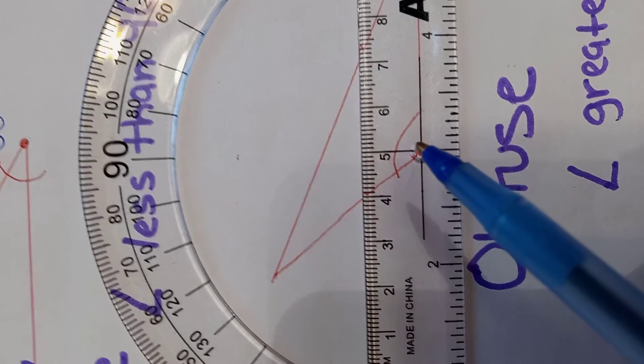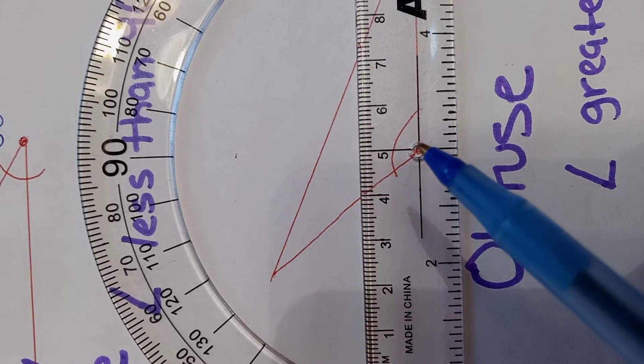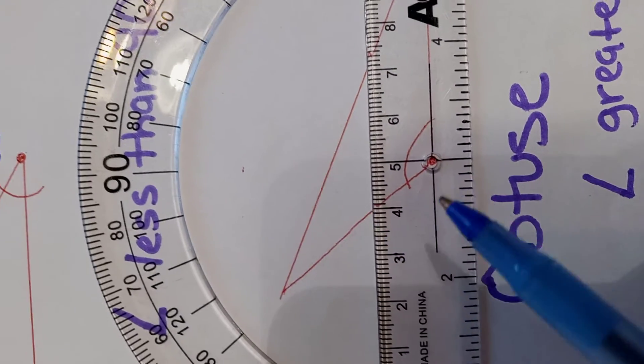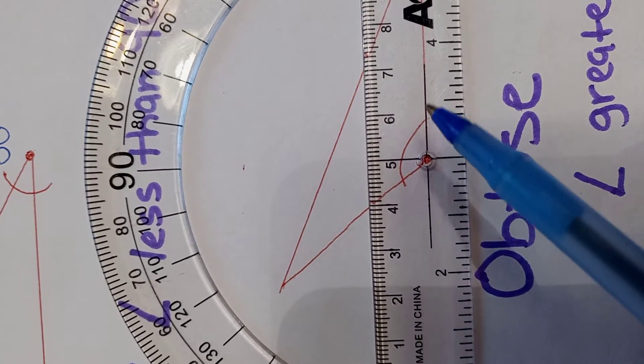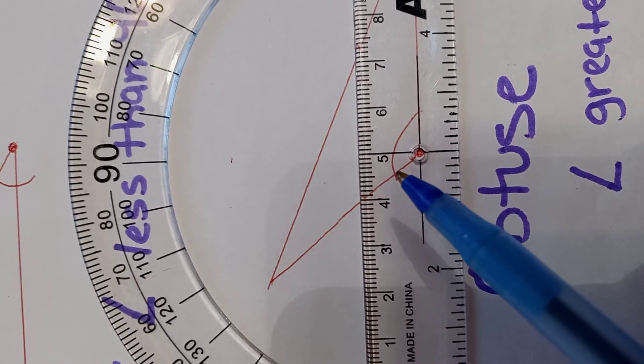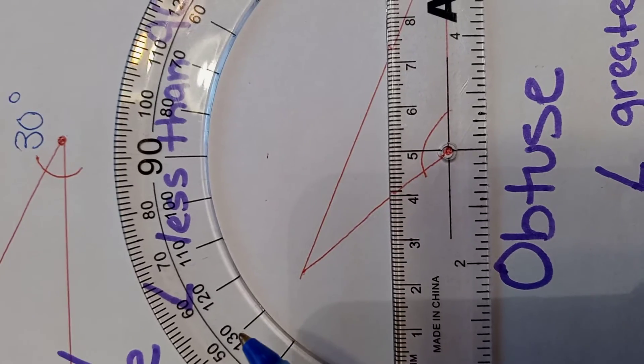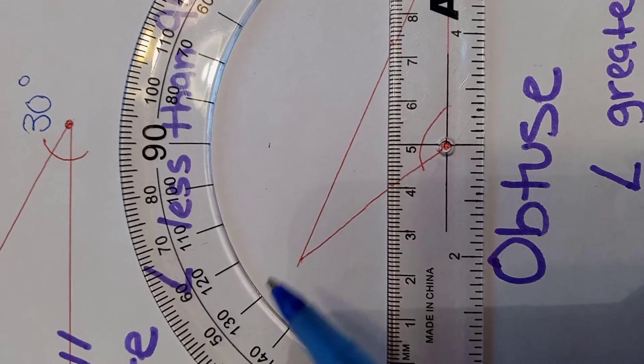But since it doesn't make an L, and it's not half of the L, it's actually surpassing the L, it's going to be greater than 90 degrees. So the angle is 130 degrees.